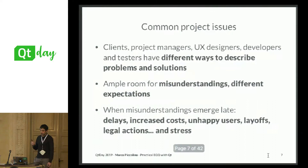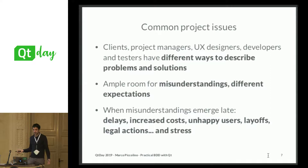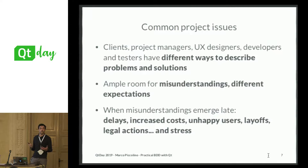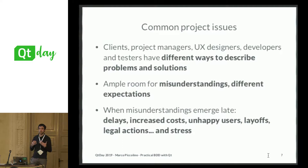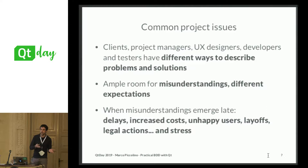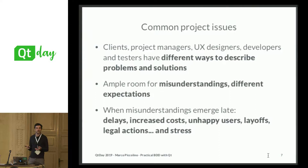A little bit of theory. What are common project issues we face in our work? The first one is that clients, project managers, UX people, developers, and testers have different ways to describe problems and solutions. Each has their own language — graphical language, programming, flowcharts, and so on. If there are different languages, there is room for misunderstandings and different expectations. When this happens we get delays, increased costs, unhappy users, layoffs, legal actions, and basically at least some stress. So we want to avoid all of that.